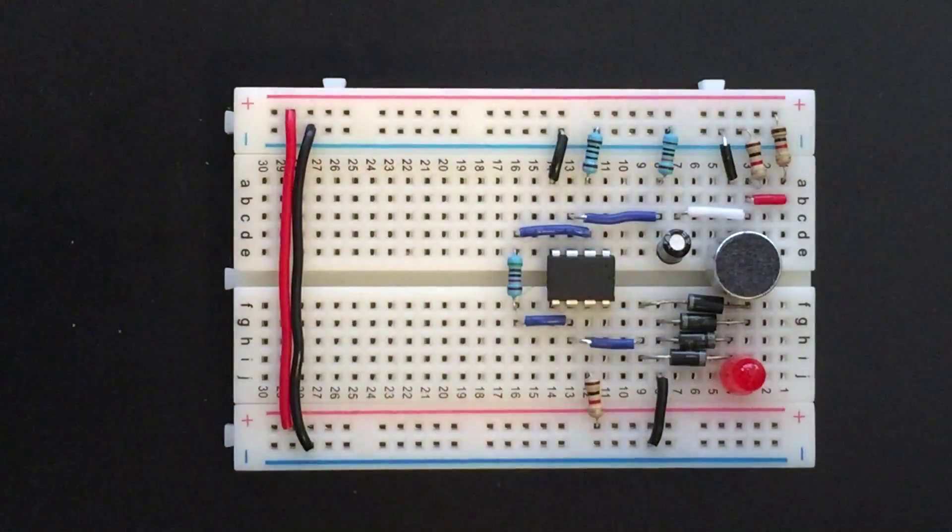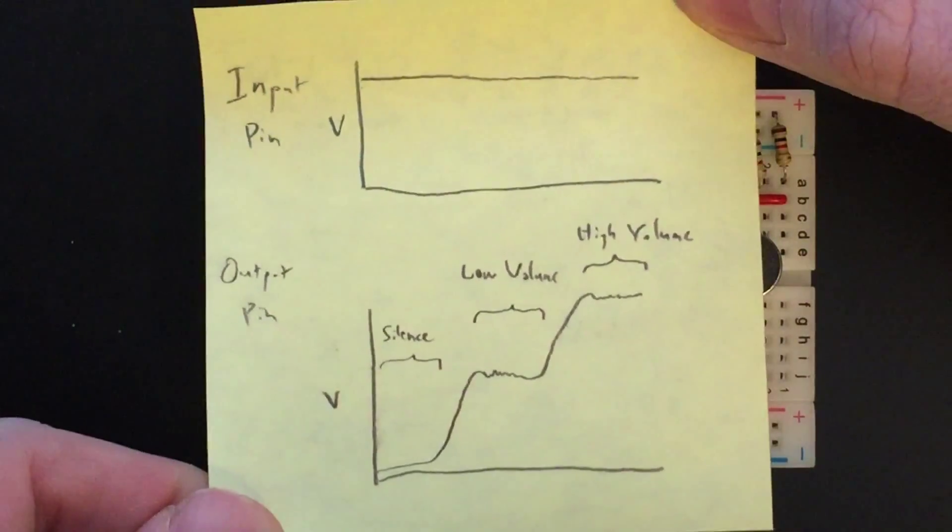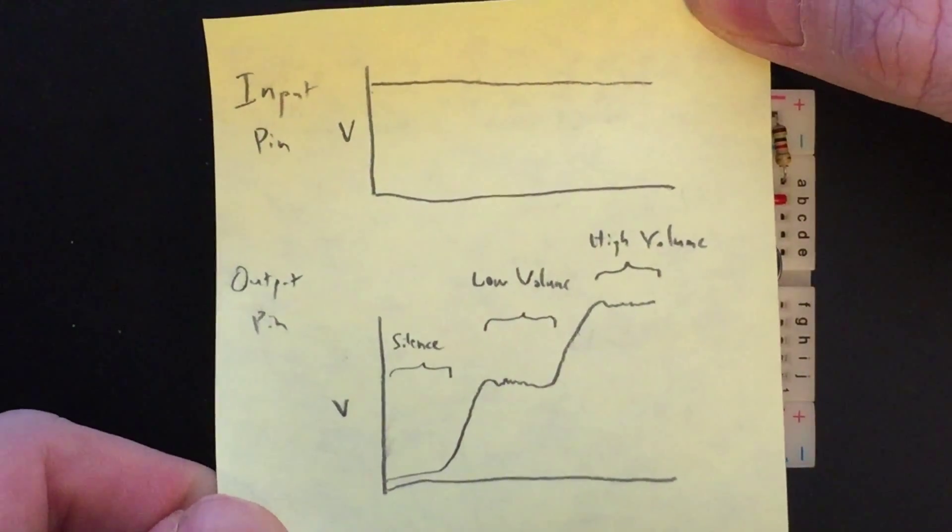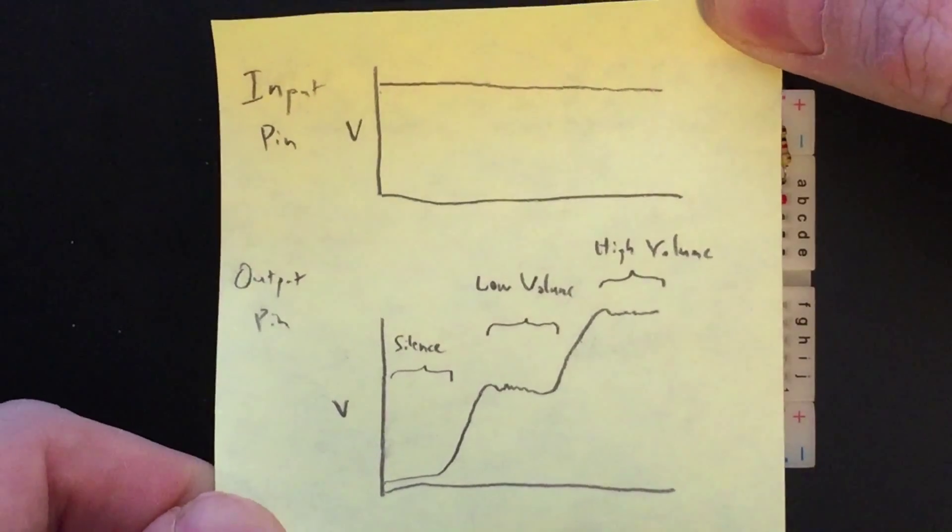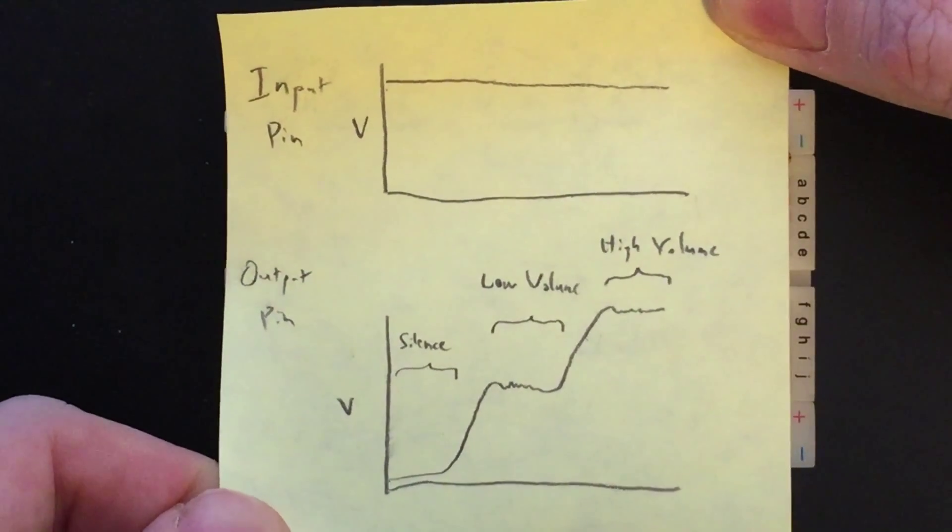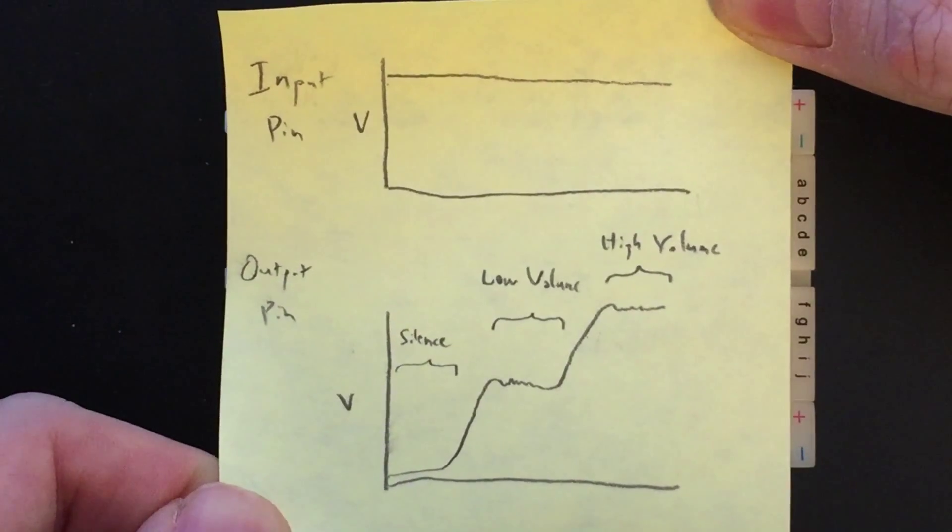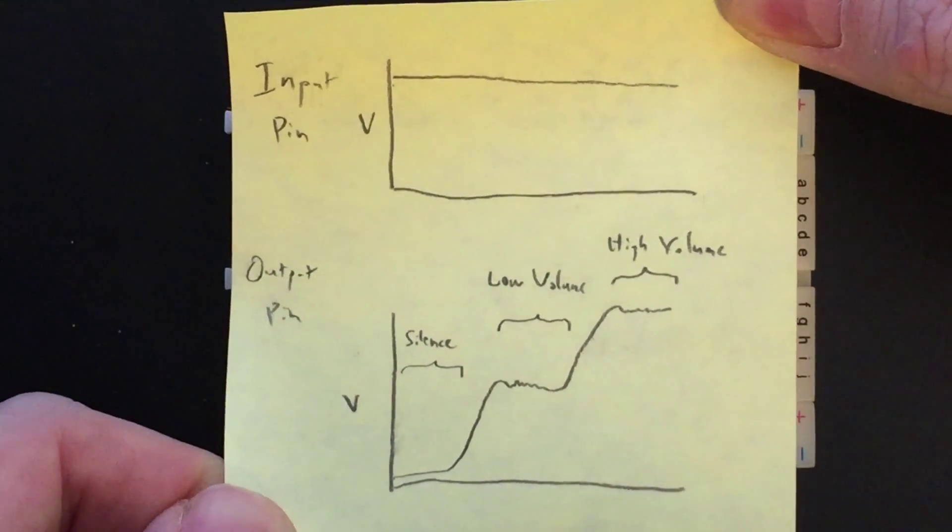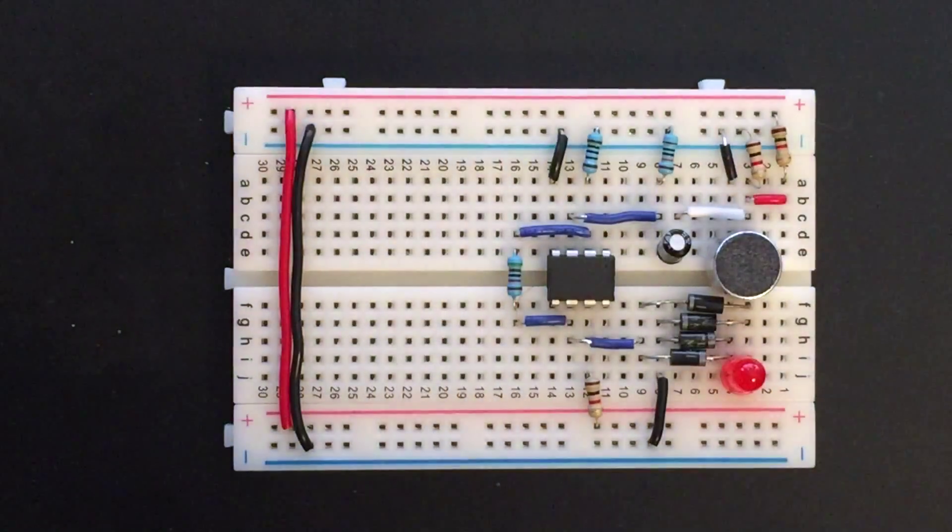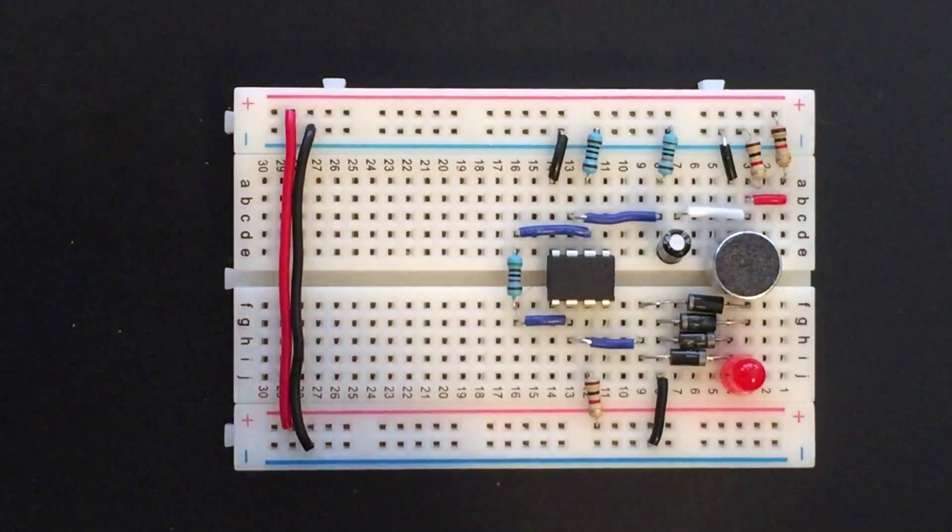What I was expecting when I started experimenting with it was that it would work something like this, where it has just an input pin and an output pin. If you just feed it the input voltage that it's supposed to get, you should get an output pin voltage that varies with magnitude just based on the volume level that it's detecting. To my surprise, it actually worked a little bit differently.